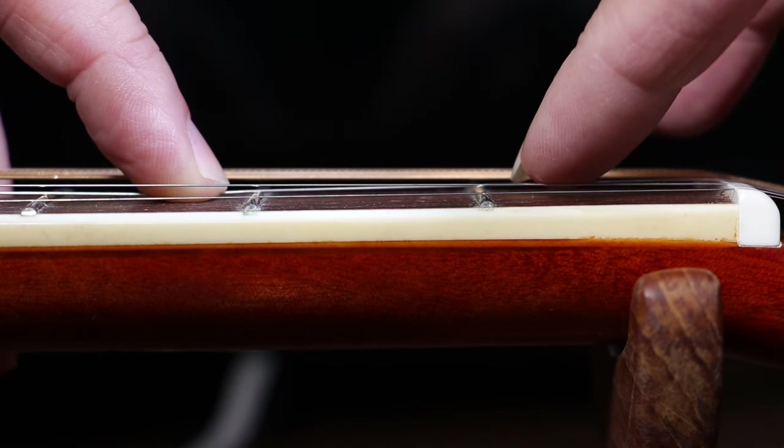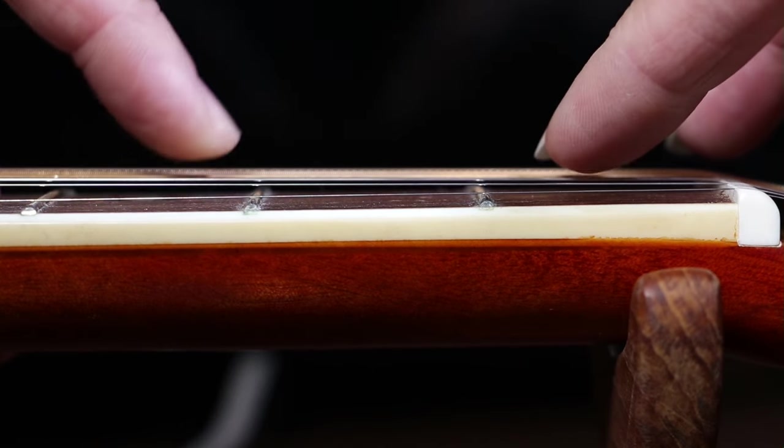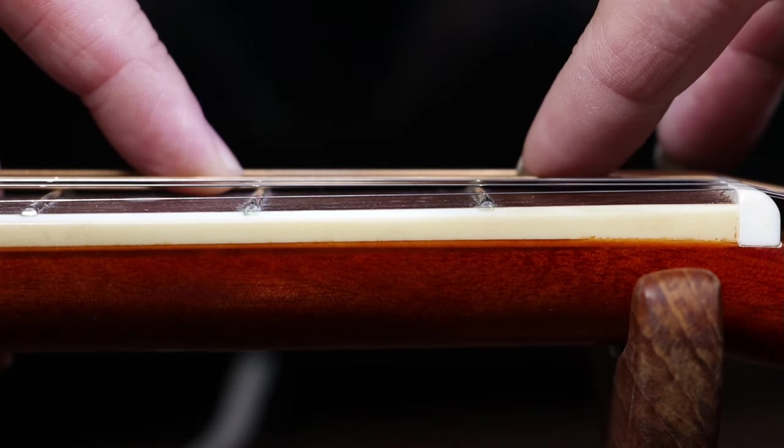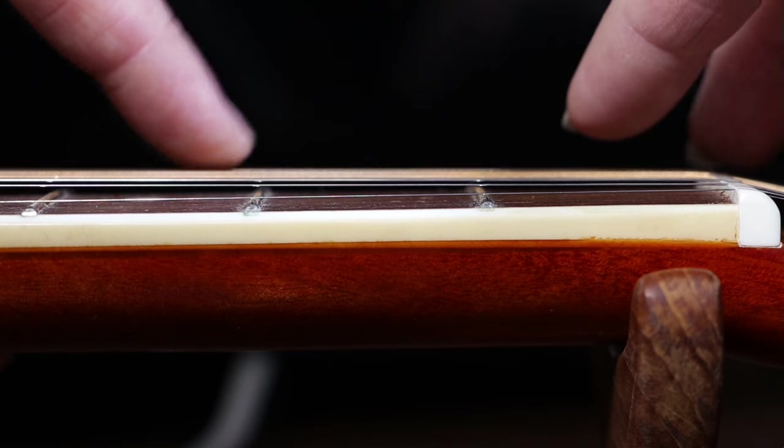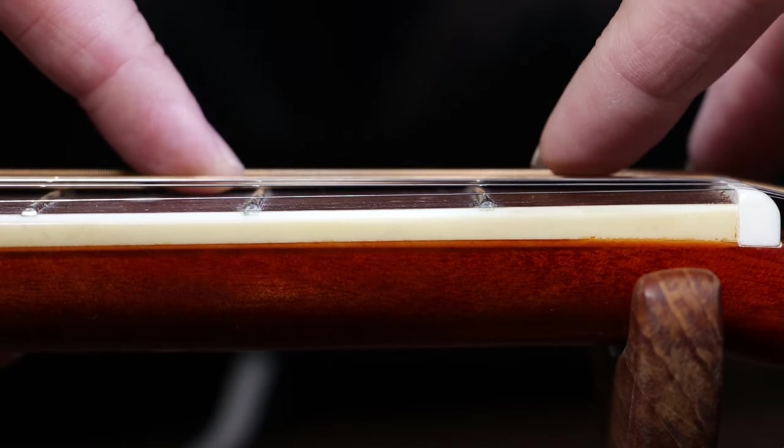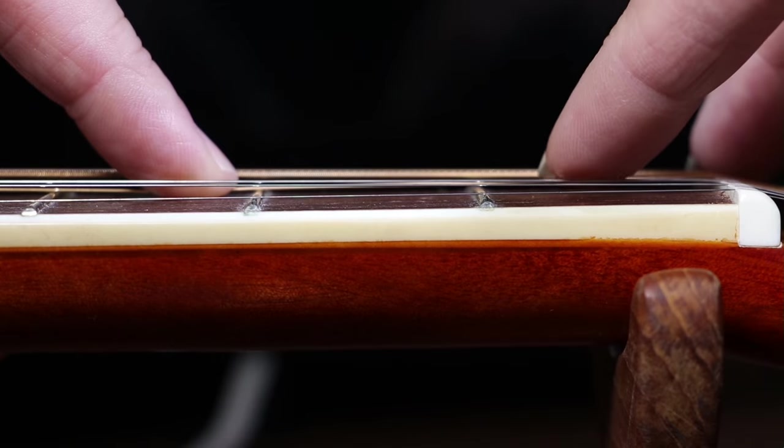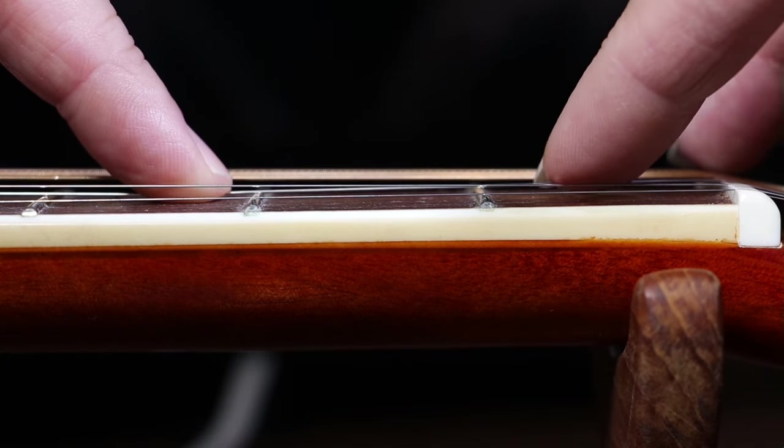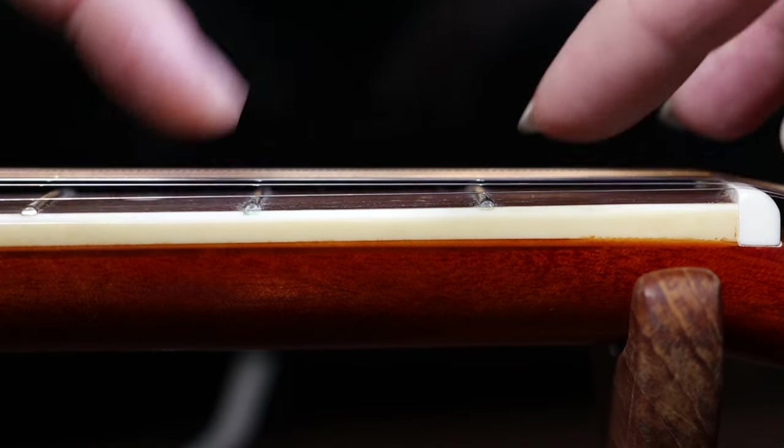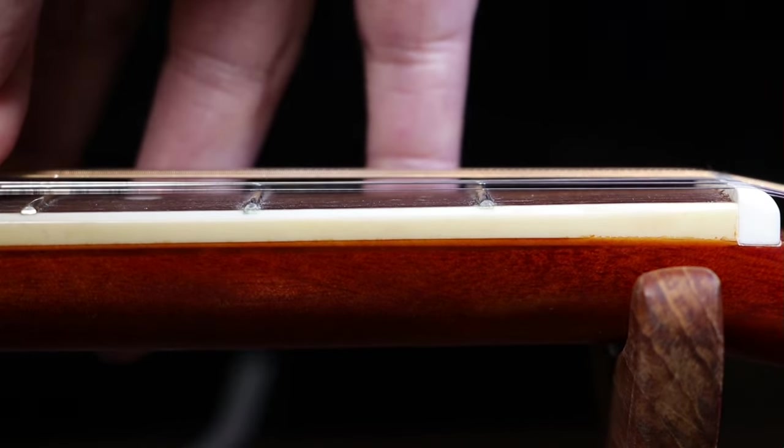Even before I started testing the action at the nut, I could tell pretty much straight away that it was a good height. And sure enough, my tests are confirming that. I'm very pleased with this, the action is a perfect height and doesn't need any more adjustments on this end of the guitar. However, it does show up the saddle as being a little bit high still. But, I'll leave this for a future video.